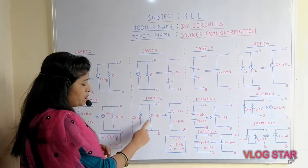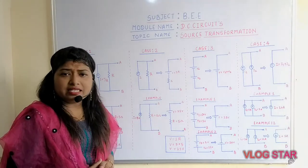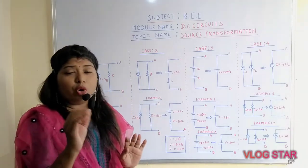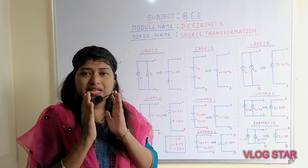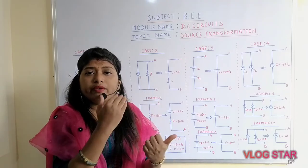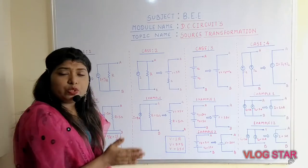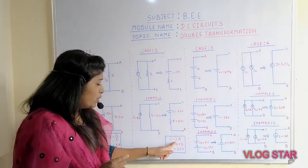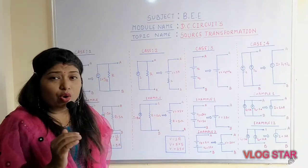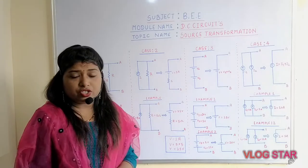To understand case number two, let's consider one example. The current is given as I = 5 ampere and R = 5 ohms. This parallel combination can be converted into a series combination of a voltage source and resistance. Using Ohm's law, V = I × R. Substituting the values, you get V = 25 volts.